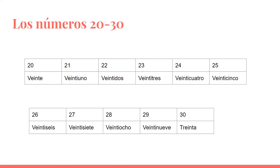You can kind of see that with 21 — what you've done is take off the y on veinte at the end, replaced it with an i, and then added the number of the ones place. So it's really veinte y uno, but you're saying it really fast, and so eventually it got shortened to veintiuno. The letter ye got taken out and replaced with an i, and the word got smushed together. Again: veinte, veintiuno, veintidós, veintitrés, veinticuatro, veinticinco, veintiséis, veintisiete, veintiocho, veintinueve, treinta.